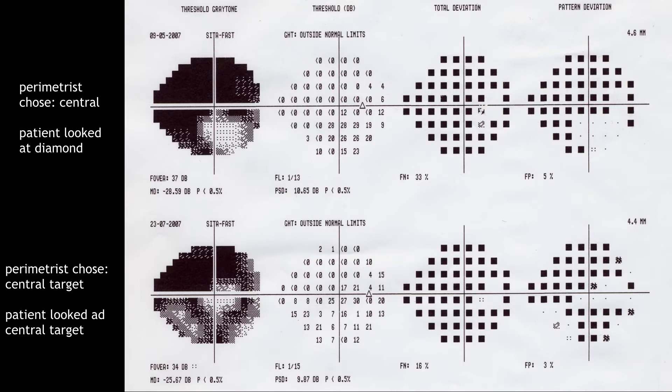This is an overview printed at the top part. We have an eye line located at the bottom part of the visual field, which is not typical in patients with advanced glaucoma. After repeating the test we have the typical central eye line. The perimeter first chose the central fixation target but the patient looked at the diamond; when the test was repeated the perimeter chose central and the patient looked at the central target.